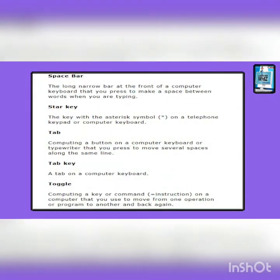Space bar: the long narrow bar at the front of a computer keyboard that you press to make a space between words when you are typing. The key with the asterisk symbol on a telephone keypad or computer keyboard is known as a star key. Tab: computing, a button on a computer keyboard or typewriter that you press to move several spaces along the same line.